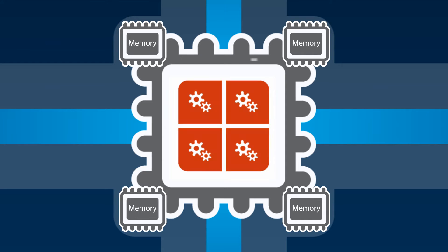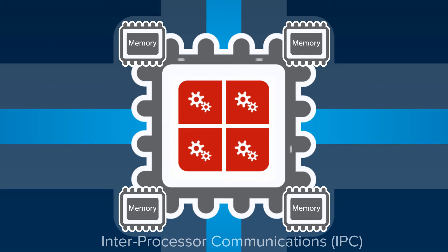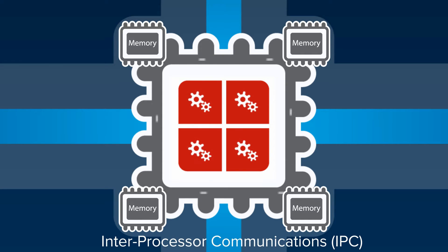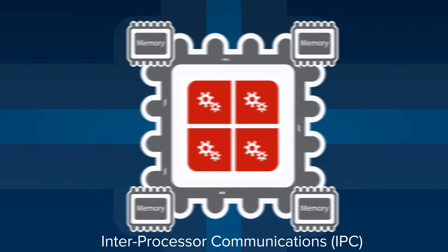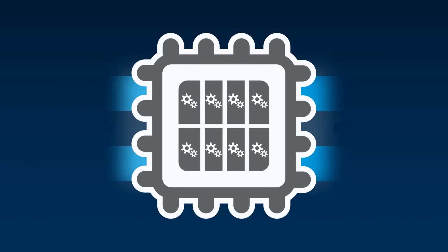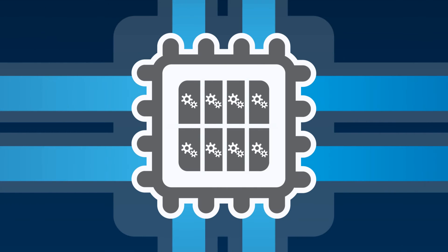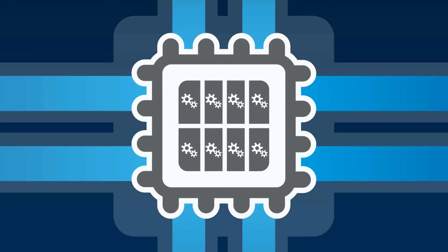Old designs use IPC, or inter-processor communications, to share memory state, which creates challenges that worsen as CPU core density increases. Each CPU core must be aware of the configuration, security, and cached objects of all the sessions processed by all the other cores.